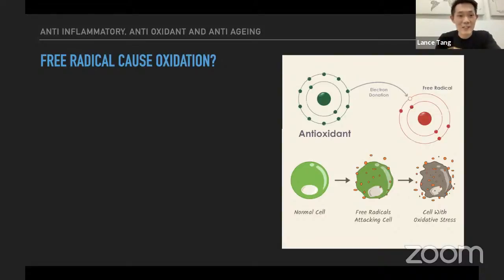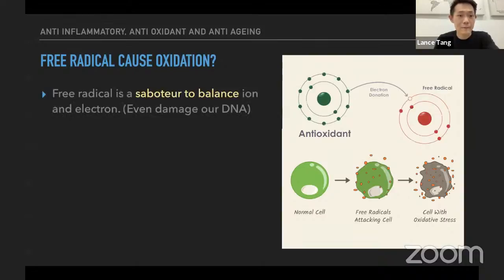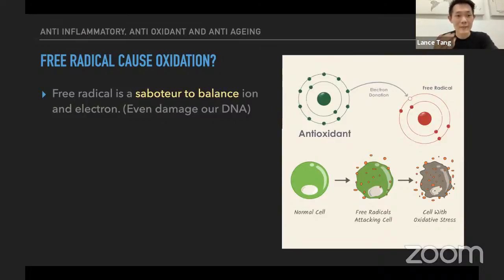Inside our body there is a lot of war happening with free radicals. How do we ensure we always win that war? That is the important thing to know in the antioxidant section. To reiterate from the diagram — free radical is a saboteur to the balance of ions and electrons. I hope by now everyone has some simple idea what free radicals are.